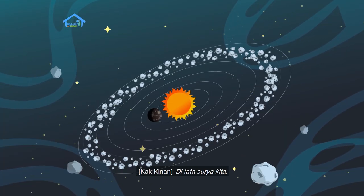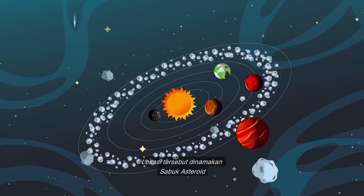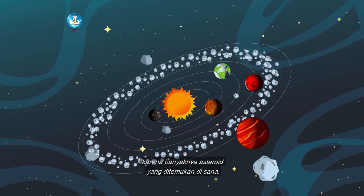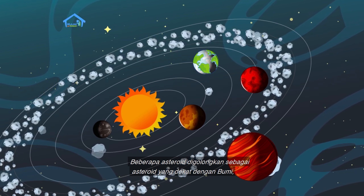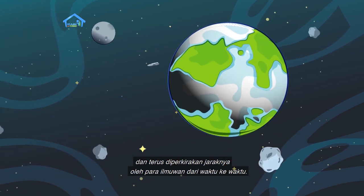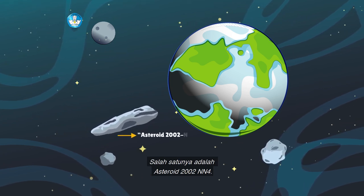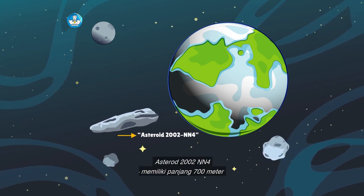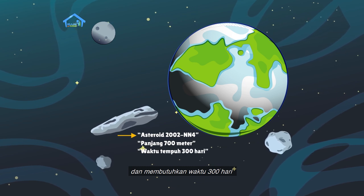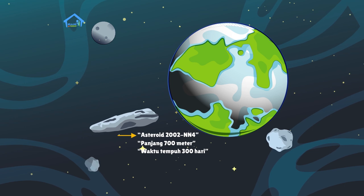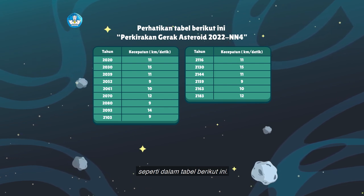Ayo mencoba! Di tata surya kita, asteroid banyak ditemukan di antara orbit Mars dan Jupiter. Lokasi tersebut dinamakan sabuk asteroid karena banyaknya asteroid yang ditemukan di sana. Beberapa asteroid digolongkan sebagai asteroid yang dekat dengan bumi dan terus diperkirakan jaraknya oleh para ilmuwan dari waktu ke waktu. Salah satunya adalah asteroid 2002 NN4, yang memiliki panjang 700 meter dan membutuhkan waktu 300 hari untuk sekali berputar mengitari matahari. Kecepatan gerak 2002 NN4 diprediksi oleh para ilmuwan seperti dalam tabel berikut.